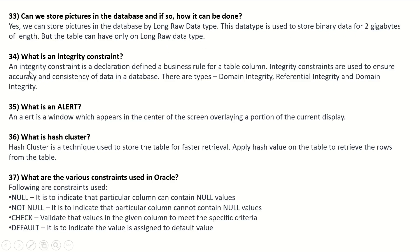What is an integrity constraint? An integrity constraint is a declaration defining business rules for a table column. Integrity constraints are used to ensure accuracy and consistency of data in a database. Types include domain integrity and referential integrity. What is an alert? An alert is a window which appears in the center of the screen, overlying a portion of the current display. What is a hash cluster? A hash cluster is a technique used to store a table for faster retrieval by applying a hash value on the table.